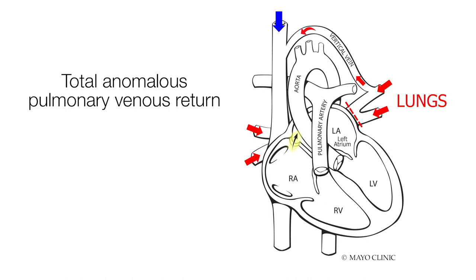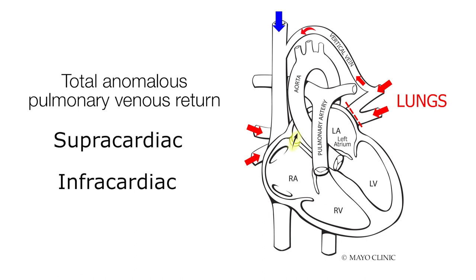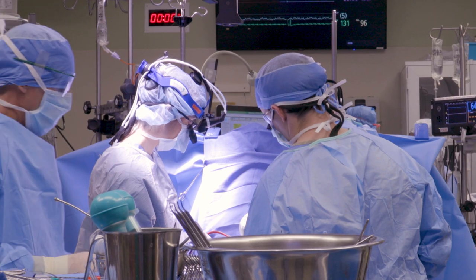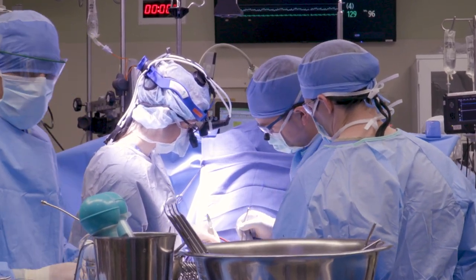There are three main types of TAPVR depending on where the vertical vein connects: supracardiac if it connects above the heart, shown in this diagram; infracardiac if it connects below the heart; and intracardiac. If and when the blood flow of these pulmonary veins is obstructed, these babies get quite sick. In this video we demonstrate the surgical technique for repair.